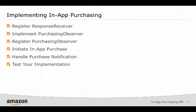To implement the In-App Purchasing API, set up the response receiver to listen for broadcast intents from the Amazon client. This lets your app process the callbacks triggered from the response receiver. Implement the PurchasingObserver interface and register an instance with the PurchasingManager. Next, initiate a purchase request and add code to handle the purchase response. You can test this implementation using SDK Tester.